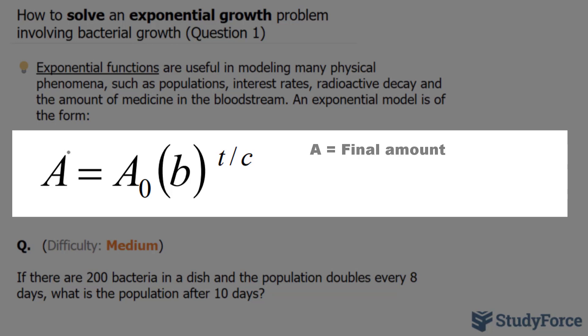This big A represents the final amount. This represents the initial amount. So if we're looking for the final amount of bacteria, it would be represented by A, and the initial amount, what we start with, would be A sub-zero.